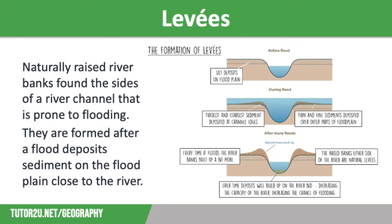Depositional processes in the lower course of the river lead to the formation of levees and floodplains. Periods of prolonged heavy rainfall cause discharge in a river to rise, meaning that the river level will rise above the banks and flood the surrounding land. Over time, repeated annual flooding will lead to alluvium and sediment being deposited, forming levees and floodplains.